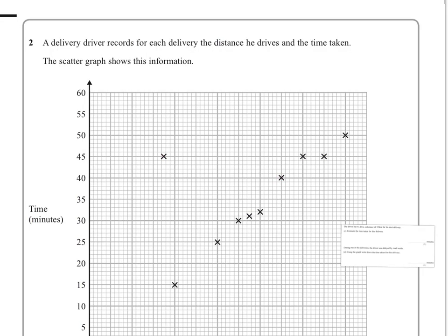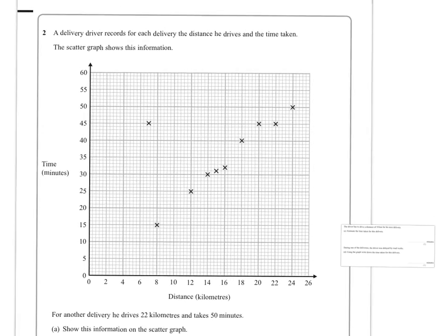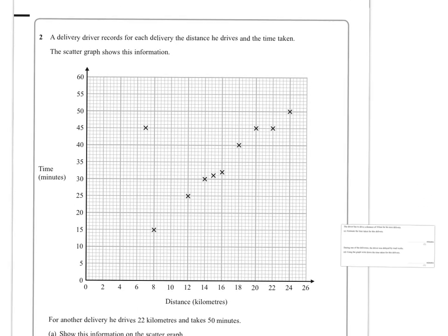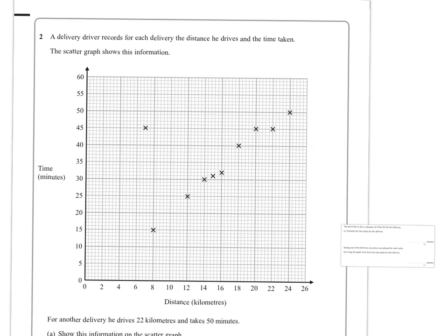So question two, a delivery driver records for each delivery the distance he drives and the time taken. The scatter graph shows this information. So what have we got to look at here? Well it says that for another delivery he drives 22 kilometers and takes 50 minutes, show this information on the scatter graph. So we want to look at 22 kilometers and 50 minutes and make sure we get that accurately shown, like so.